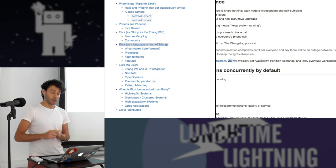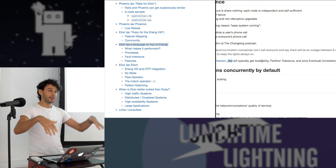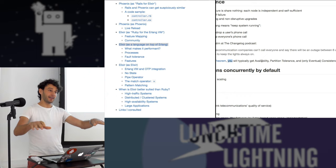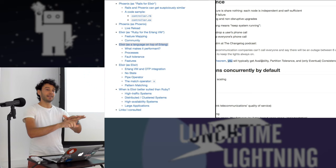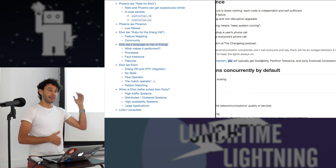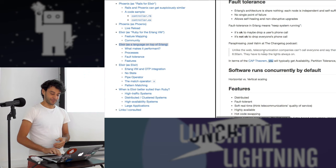In terms of the CAP theorem, you get availability — software will always be executing — and partition tolerance. If many nodes are interacting and they can't communicate with each other, they will continue serving their open connections. You get only eventual consistency: whatever happens in one partition won't be seen on the other, and when they reconnect, the language guarantees synchronization through message passing.